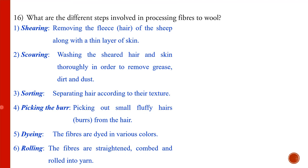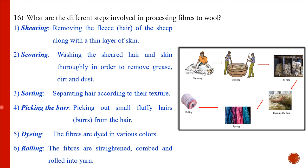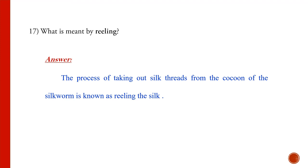The different steps in processing fibers to wool are: shearing — removing the hair of the sheep along with a thin layer of skin; scouring — washing the hair to remove dirt and dust; sorting — separating wool according to texture; picking the burr — picking out small fluffy hairs; dyeing — giving different colors to the fibers; and rolling — straightening, combing, and rolling fibers into a yarn.